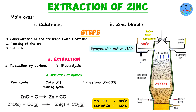Within the condenser, the zinc vapor is sprayed with molten lead. This serves two purposes: first, it aids condensation of the zinc vapor into liquid; second, it prevents re-oxidation of the zinc vapor. The molten lead surrounds the zinc vapor and acts as a barrier, reducing direct contact with oxygen and preventing zinc from combining with oxygen to reform zinc oxide.